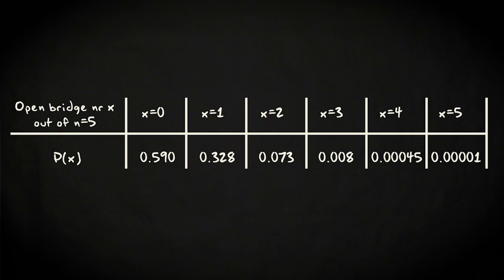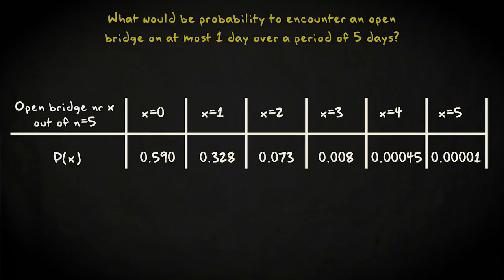Ok, let's move on to a related question, using the same example. What would be the probability to encounter an open bridge on at most 1 day over a period of 5 days?